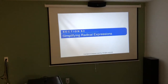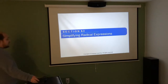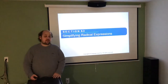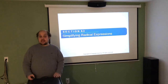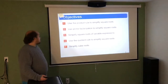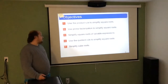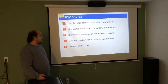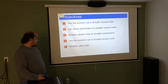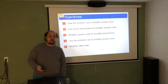In section 8.3, we're going to try and simplify radical expressions. Basically, what that means is we're going to pull out whatever perfect square or perfect cube we can and see what's left behind. We're first going to use the product rule to simplify square roots, then prime factorization, then simplify square roots of variable expressions, then use the quotient rule to simplify square roots, and finally simplify a few cubes.